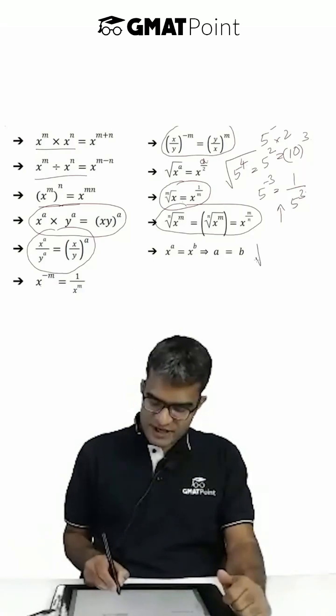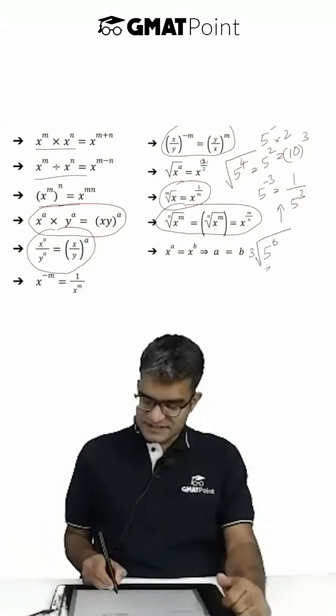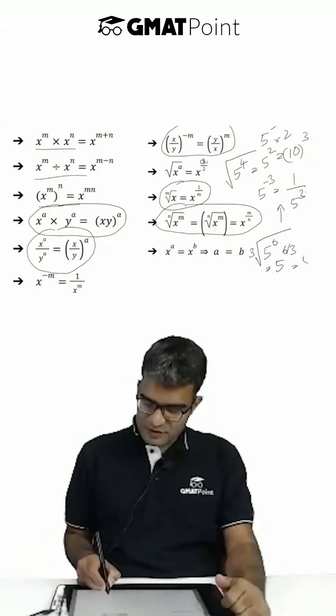For example, the cube root of 5 to the power 6 equals 5 to the power 6 by 3, which equals 5 squared.